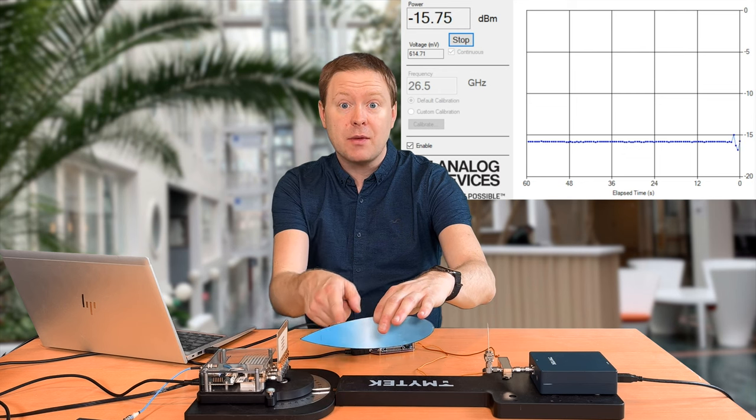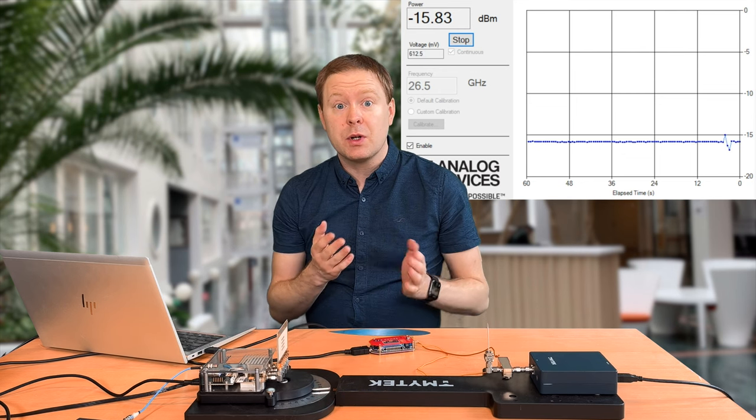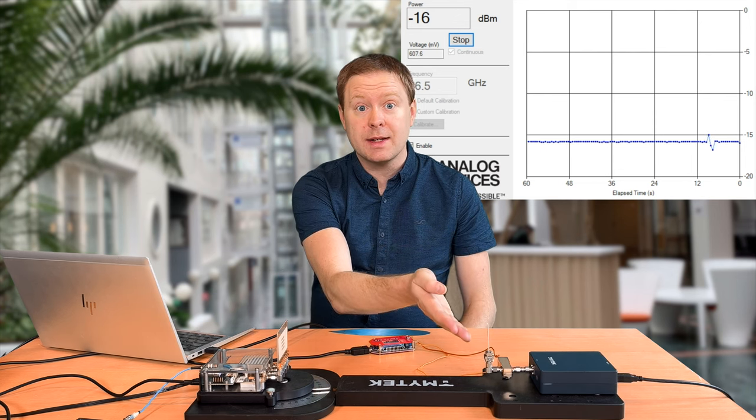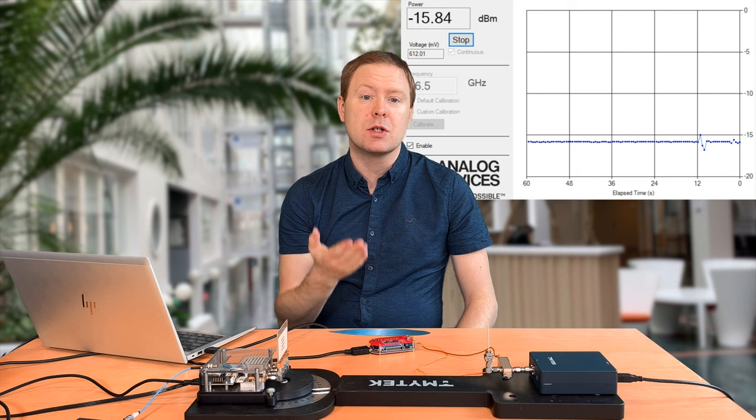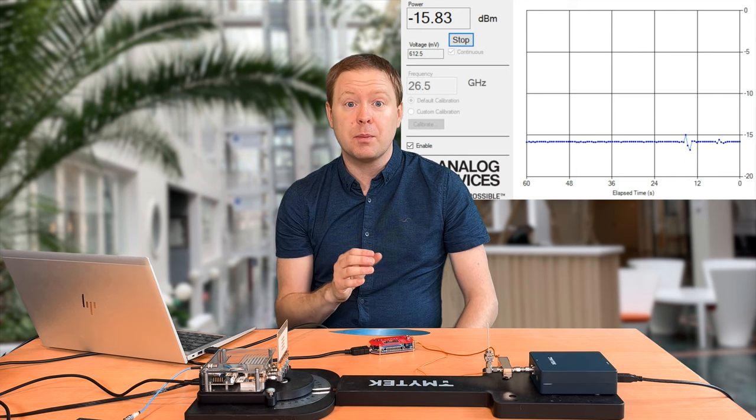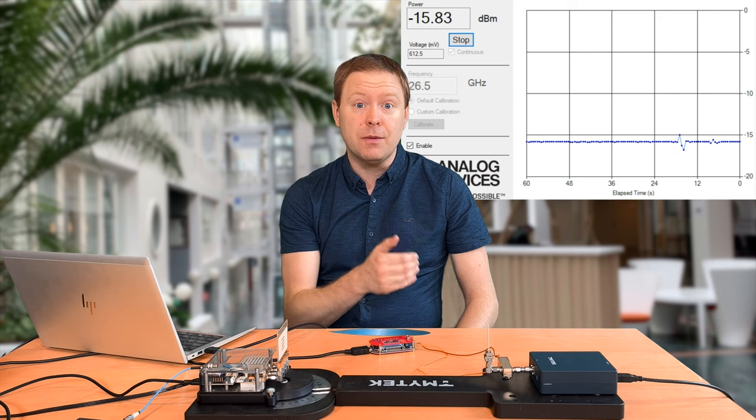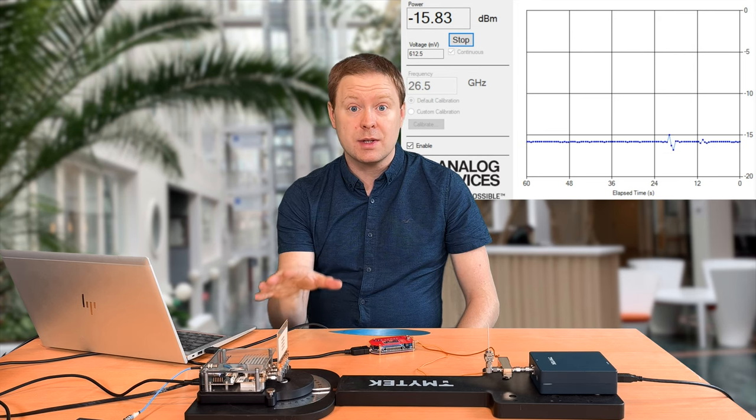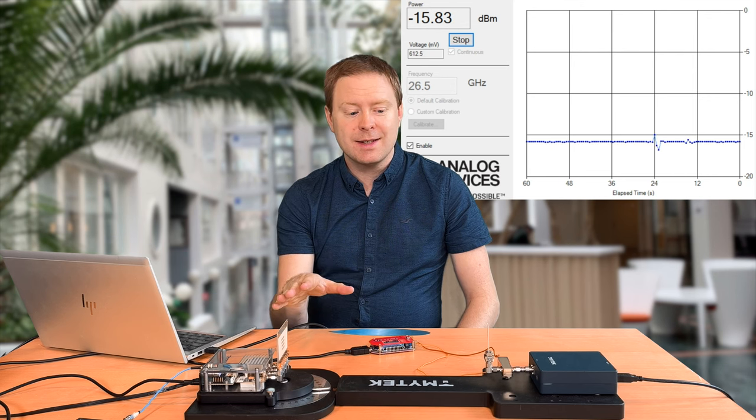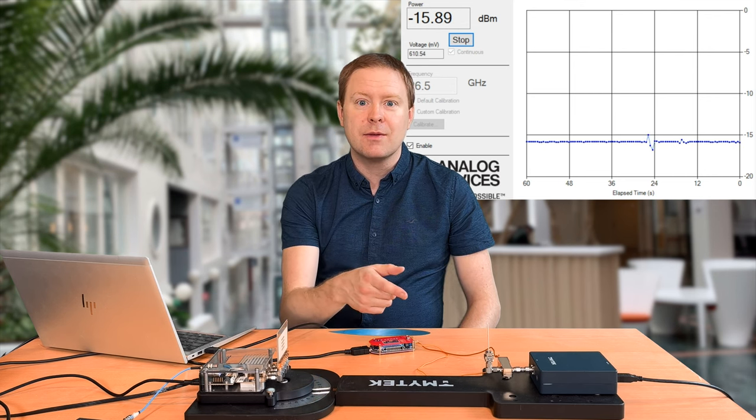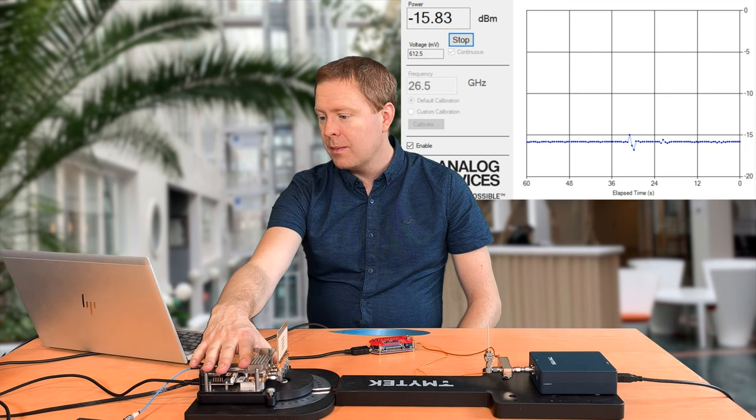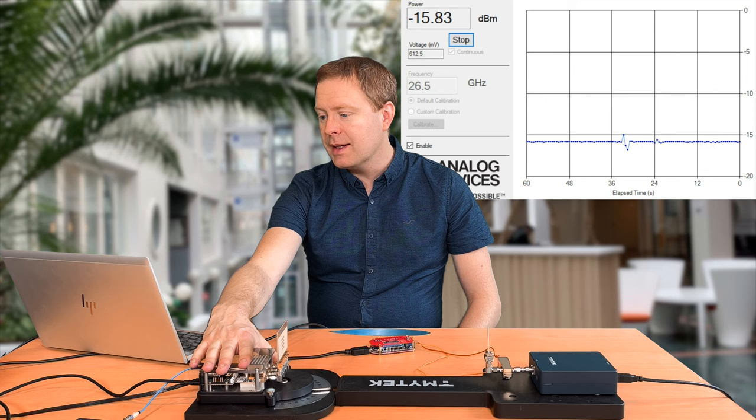But the exact shape of this beam is something that we can't measure like this. We are only seeing how much received signal power we get in the direction where the beam is supposed to point. So in order to figure out what is the signal power that is sent in different directions, we need to rotate the transmitter. So this is what I'm going to do. I will rotate it and see what is the received power when we have different rotations.